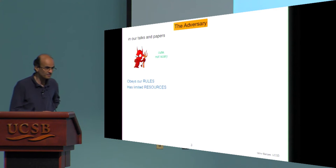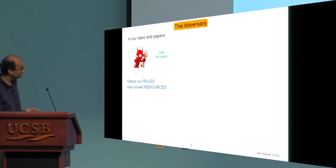In talks and papers in our community, we view adversaries as little pictures that are more cute than scary, and we set up the rules that they follow. We tell them they have to, in our models, employ certain types of oracles and do this and not do that, and they obey them.